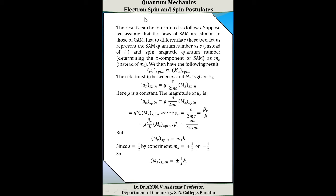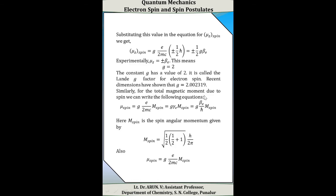We know that the z-component of spin motion is m_z = m_s × h-cross. Since s = 1/2 by the experiment, m_s = ±1/2, so m_z(spin) = ±(1/2)h-cross. Substituting these values into the equation for mu_z(spin), we get mu_z(spin) = g × (e/2mc) × (±1/2)h-cross = ±(1/2)g × beta_e. Since mu_z = ±beta_e, the value of g equals 2, and g is called the Landé splitting factor for an electron.